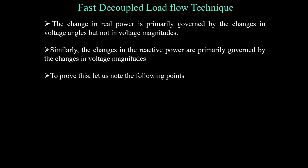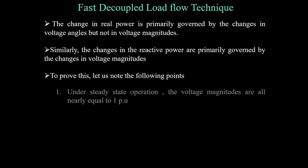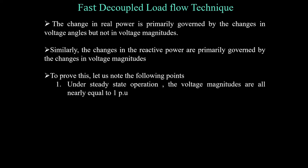The first assumption is that we consider the system is under steady state. Under steady state operation, the voltage magnitudes will be equal to 1 per unit. So we are assuming the system is under steady state operation and the voltage magnitudes of all buses are nearly equal to 1 per unit.